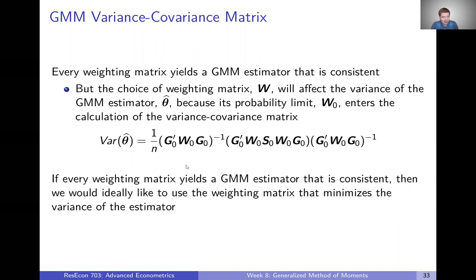This is the asymptotic variance expression from the last video, and we can see that W₀ shows up in a few places. W₀ is the probability limit of our weighting matrix, and so different weighting matrices will have different probability limits, which will yield different asymptotic variances of our estimator.